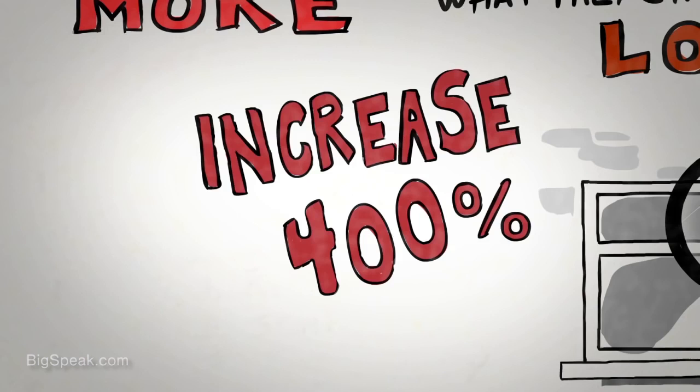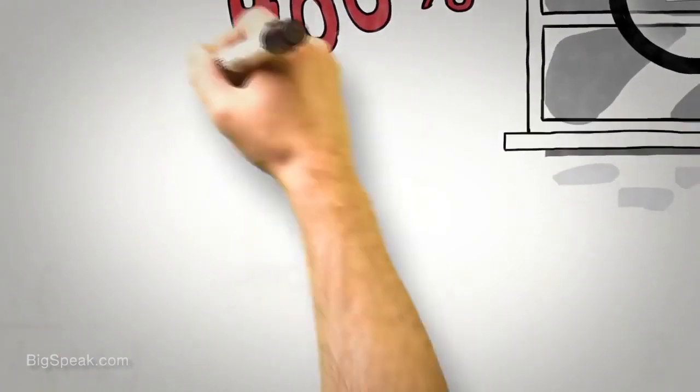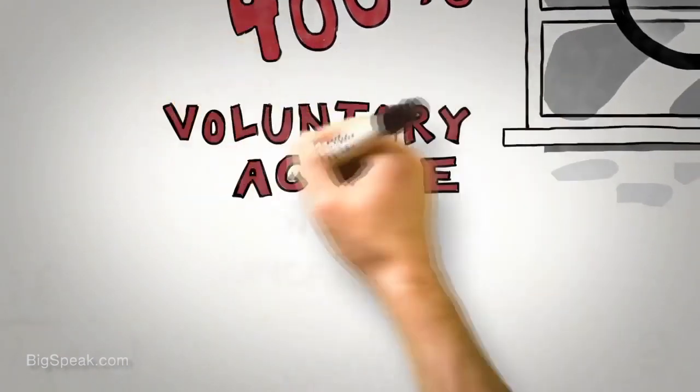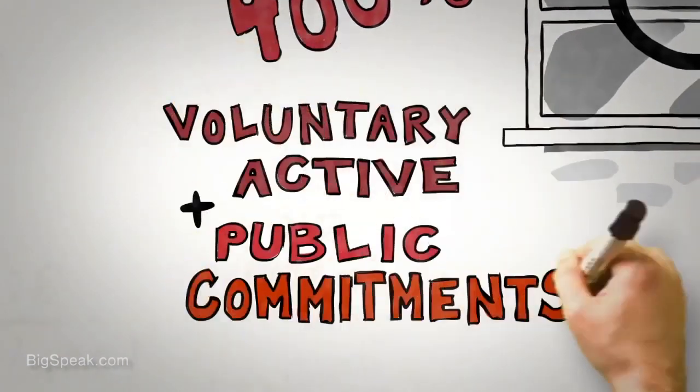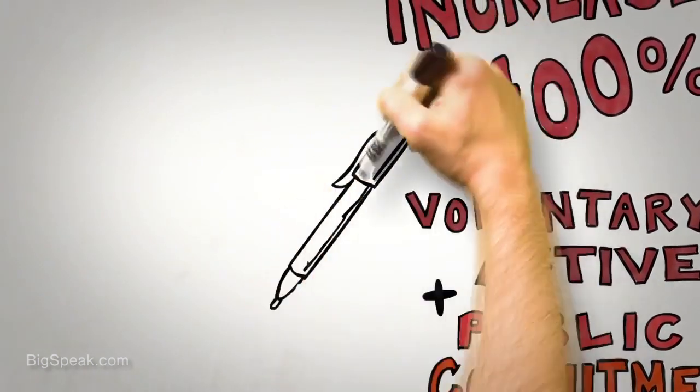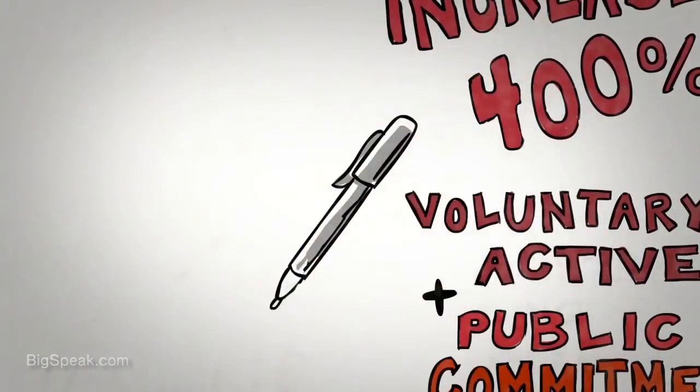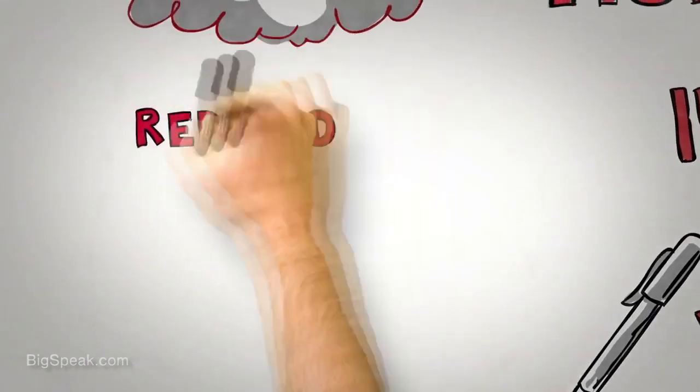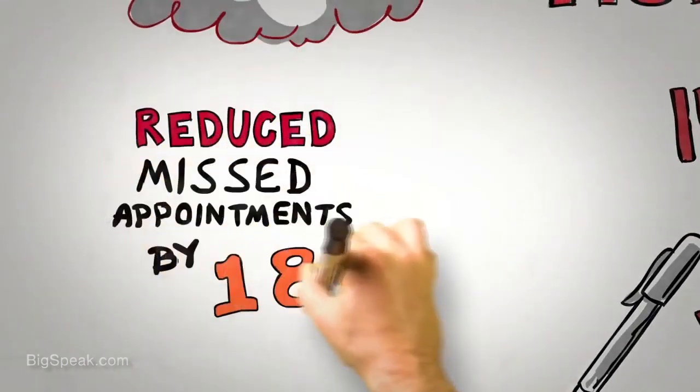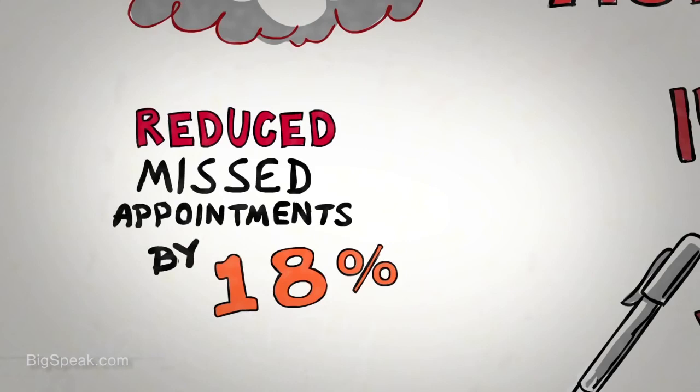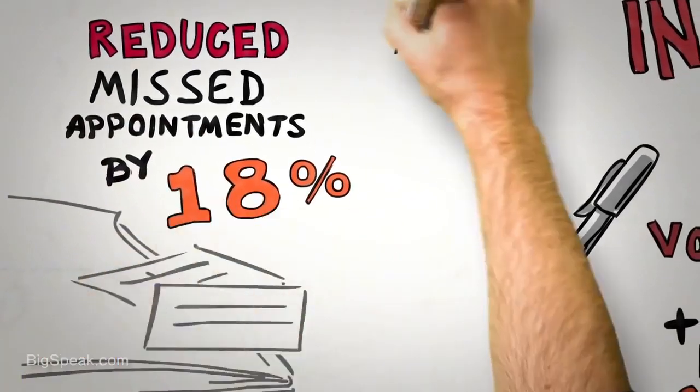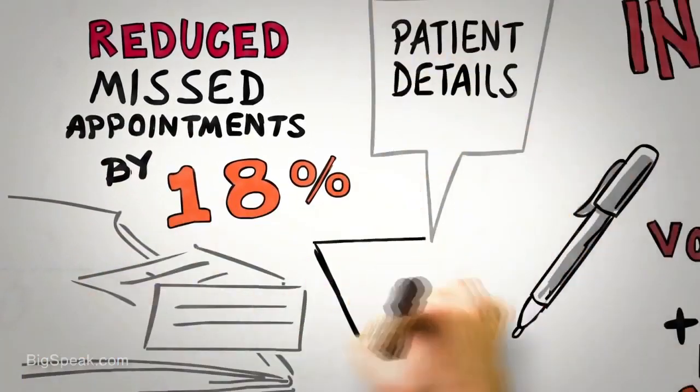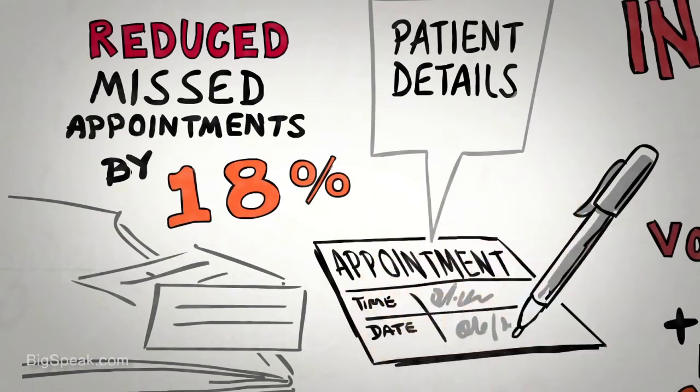So, when seeking to influence using the consistency principle, the detective of influence looks for voluntary, active, and public commitments and ideally gets those commitments in writing. For example, one recent study reduced missed appointments at health centers by 18% simply by asking the patients rather than the staff to write down appointment details on the future appointment card.